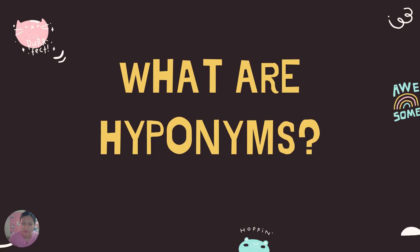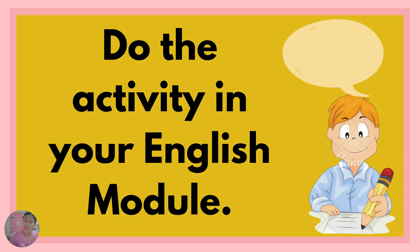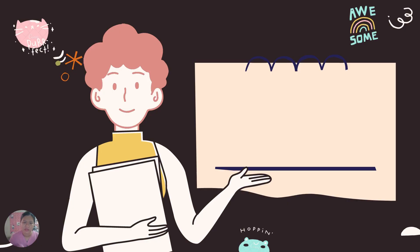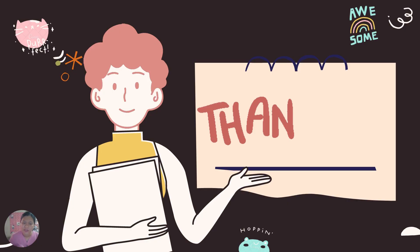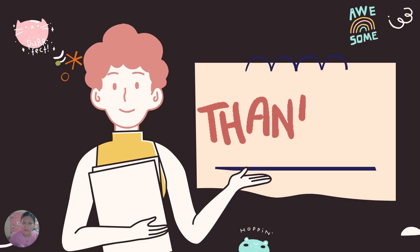Again, children: what are hyponyms? Remember, hyponyms are the specific examples of a general word group or classification. Examples are sweet, sour, and bitter for the general word taste. Now, do the activity in your English module. Thank you for listening.